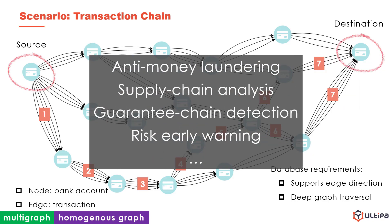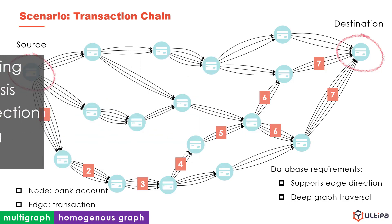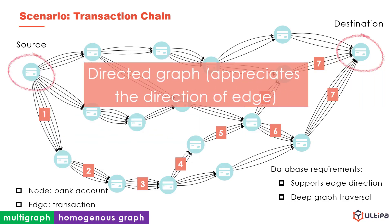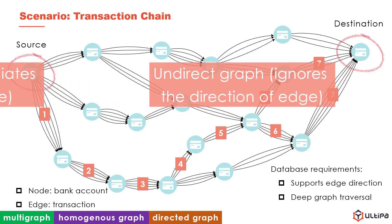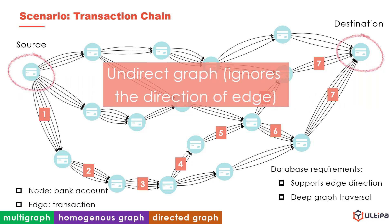Such long chains can be applied for anti-money laundering, supply chain analysis, guarantee chain detection, and risk early warning. A graph where the direction of edge is considered during graph query is called a directed graph, like the graph in the current slide. Otherwise, the graph is called an undirected graph.